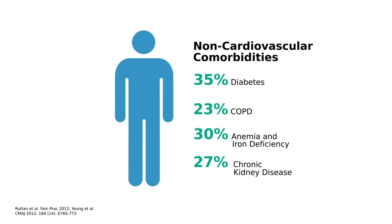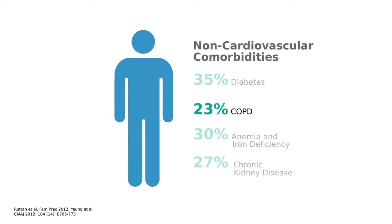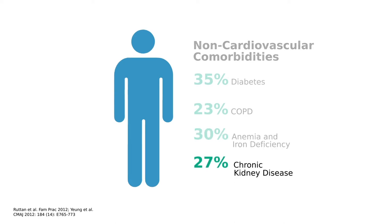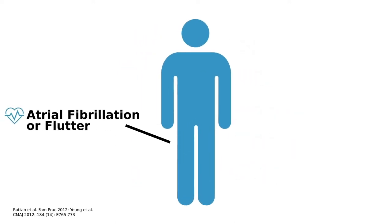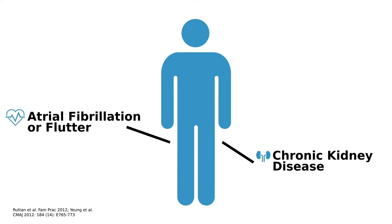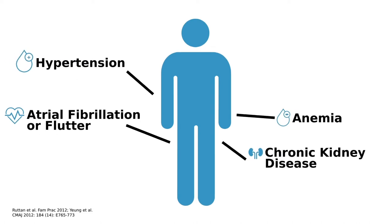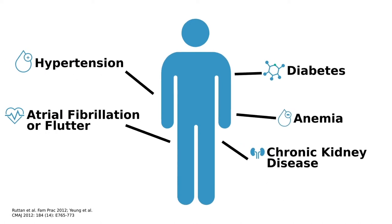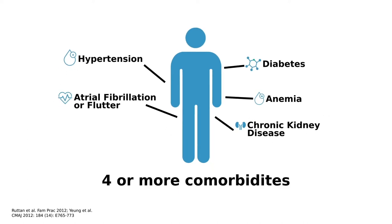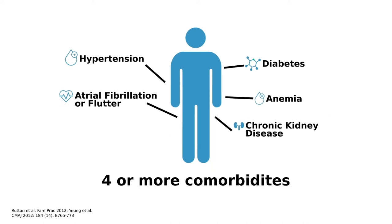Among the most common non-cardiovascular comorbidities are diabetes, chronic obstructive pulmonary disease, anemia and iron deficiency, and kidney disease. Patients typically have multiple comorbidities. In fact, a European study reported that, on average, patients with heart failure have four or more comorbidities.